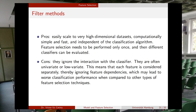Filter methods are often univariate or low-variate, meaning each feature is considered separately, thereby ignoring feature dependencies. This may lead to worse classification performance compared to other feature selection techniques. When running a filter method, you assign a score to each feature, rank them from highest to lowest, and select the top features.